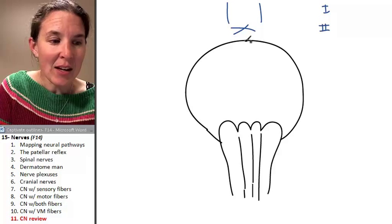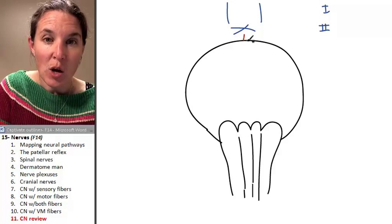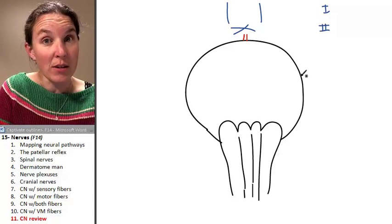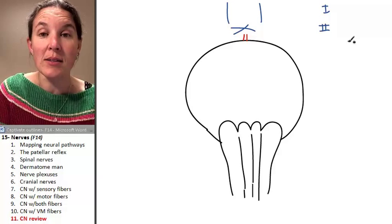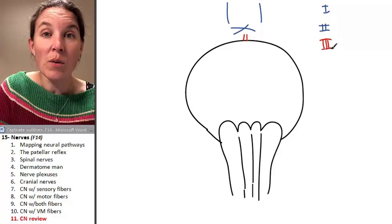And then we have, whoa, I almost got so excited I did not change my color. We have two little fellers coming out of the top at the top of the pons. And this is cranial nerve number three. All motor.